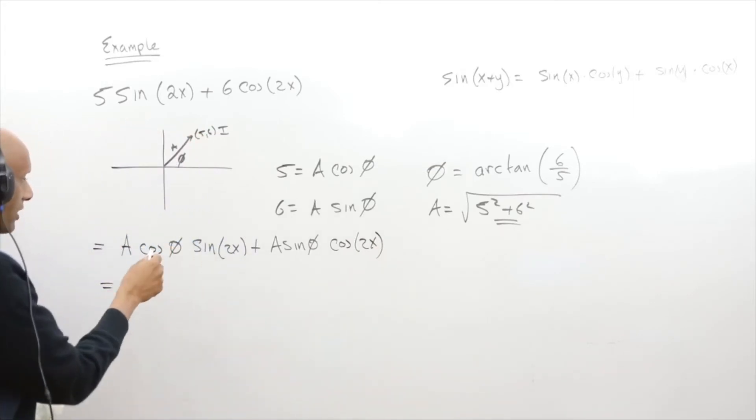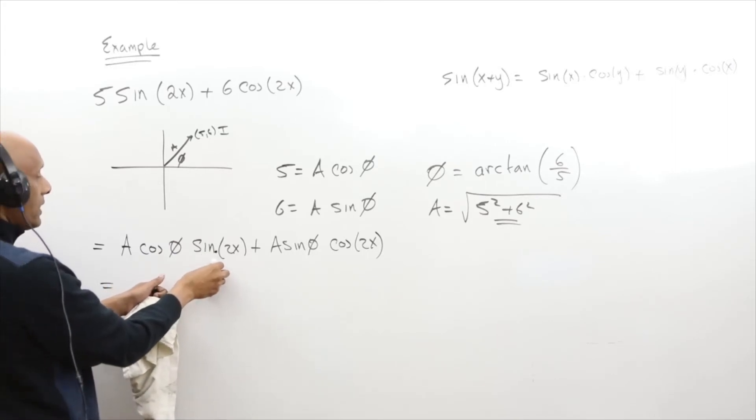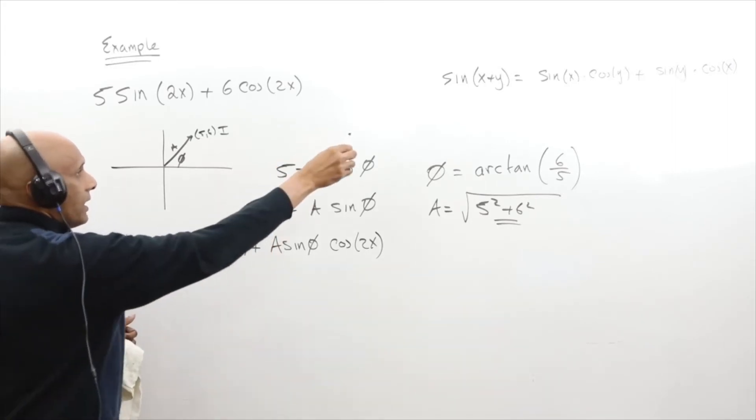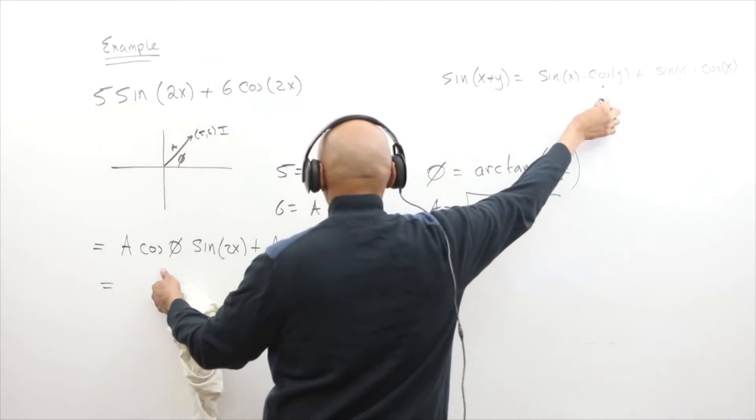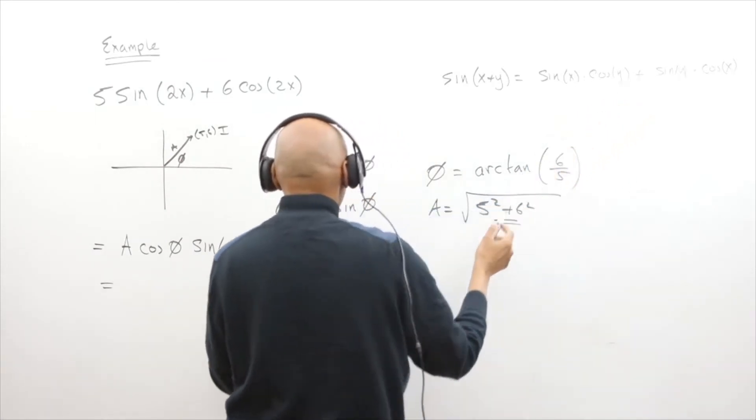Notice I can factor out the A and use the double angle formula over there. This is the sine of 2x on one side, so this could be the sine portion and here's the cosine portion. Here's our sine portion, cosine portion.